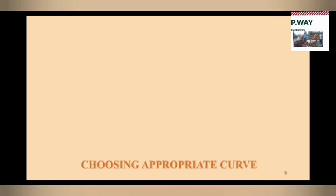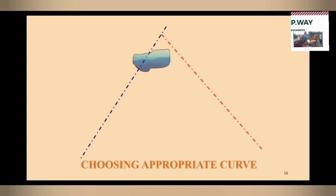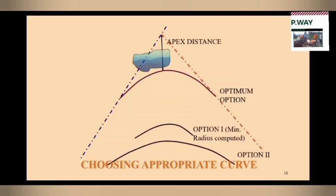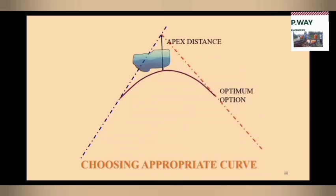We should always prefer a straight track, but geographical conditions such as rivers, ponds, and hills require us to go for a curved track. While designing the curved track we have to choose the appropriate curve. The minimum radius and the maximum radius will be omitted — we have to choose the correct adapted radius.